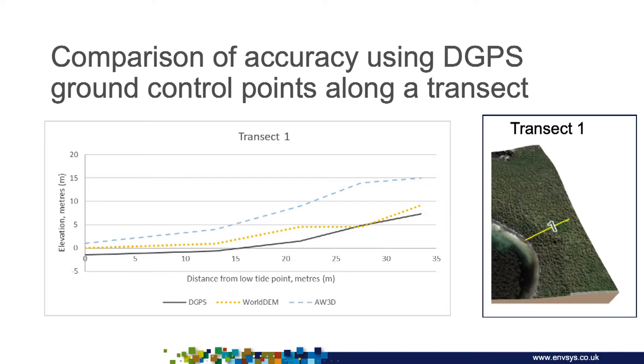This is a transect from the seashore inland. We walked that transect with a differential GPS — the black line — to two-centimetre accuracy. The World DEM tracks it very nicely. The ALOS Prism dataset is much less certain. Do not be lulled into false promises of detail from photogrammetric products. You're almost always better going for a radar or LiDAR-type product. That's something that caught me out.